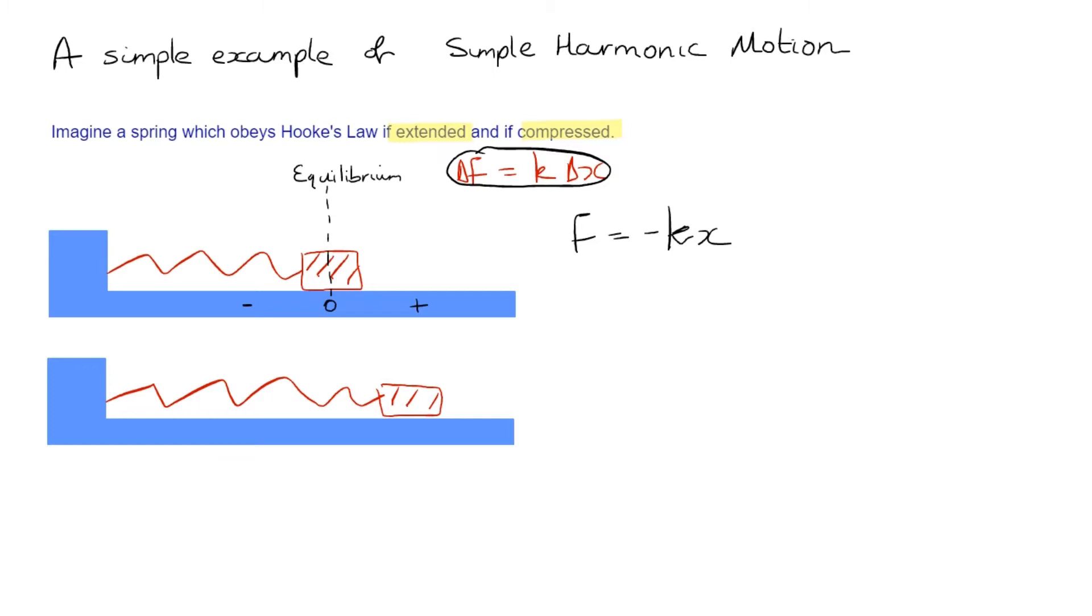Now, of course, the equilibrium position is still in the same place as it was before. That's just where it wants to be. But we do now have a displacement. So let's draw on our displacement here. Well, our displacement is from where the center of the block was to where the center of the block is. So it's that distance there. So let's call it plus D. We've extended it by a distance plus D.